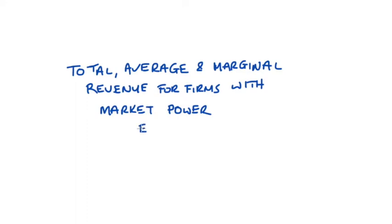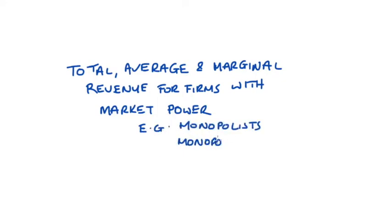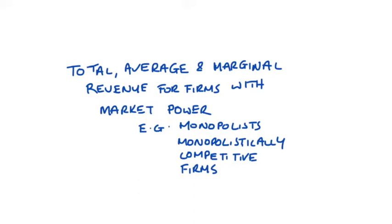Hi everyone. In this video I'm going to look at total, average and marginal revenue for firms with market power, so for instance for monopolists or for monopolistically competitive firms. I do have other videos that address total, average and marginal revenue in perfect competition, and also as concepts more generally, so I will link to those videos in the description below, just in case they're more appropriate for what you want.